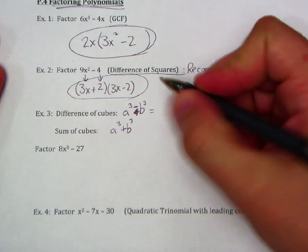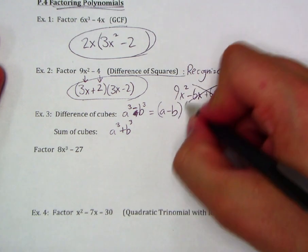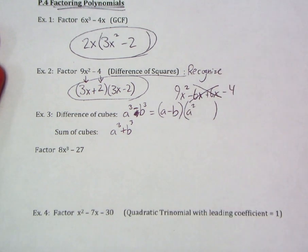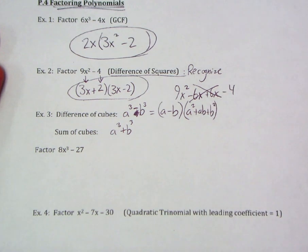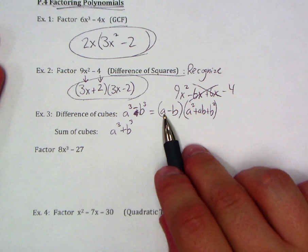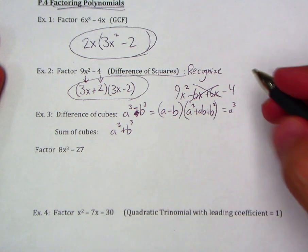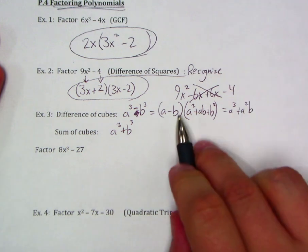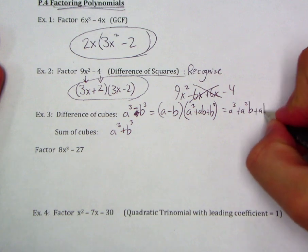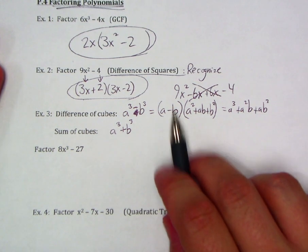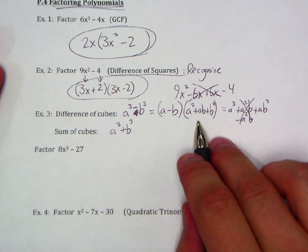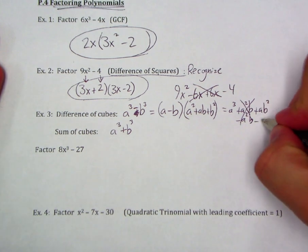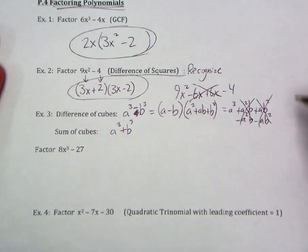a³ - b³ can always factor out as (a - b) times the quantity (a² + ab + b²). Now let's see if this actually works out for us. a times a² gives us a³. a times ab gives us a positive a²b. And finally, a times b² gives me that positive ab². Next I'll go to my -b. -b times a² gives me a negative a²b. Excellent. Those are reduced out. -b times ab is going to give me -ab². Once again, they cancel out. And finally, -b times b² end up with -b³.